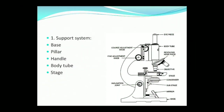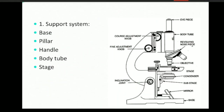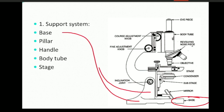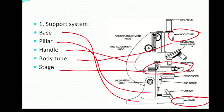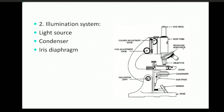The support system has the following parts: a base — you can see here, this is the base — a pillar, a handle, a body tube, and a stage. The illumination system has a light source, which is either internal or external, a condenser, and an iris diaphragm.